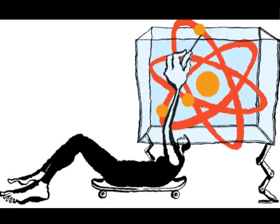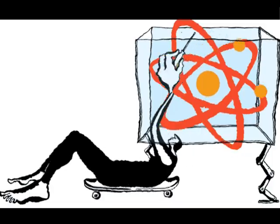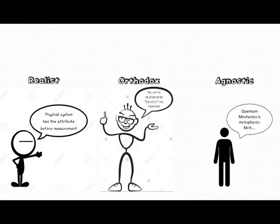At the time the scientific community was divided into three factions. The realist view that the physical state of the system actually has the attribute prior to measurement. Orthodox shared the view that the act of measurement actually created the property. While the agnostics were like meh, everything was metaphysical anyway.